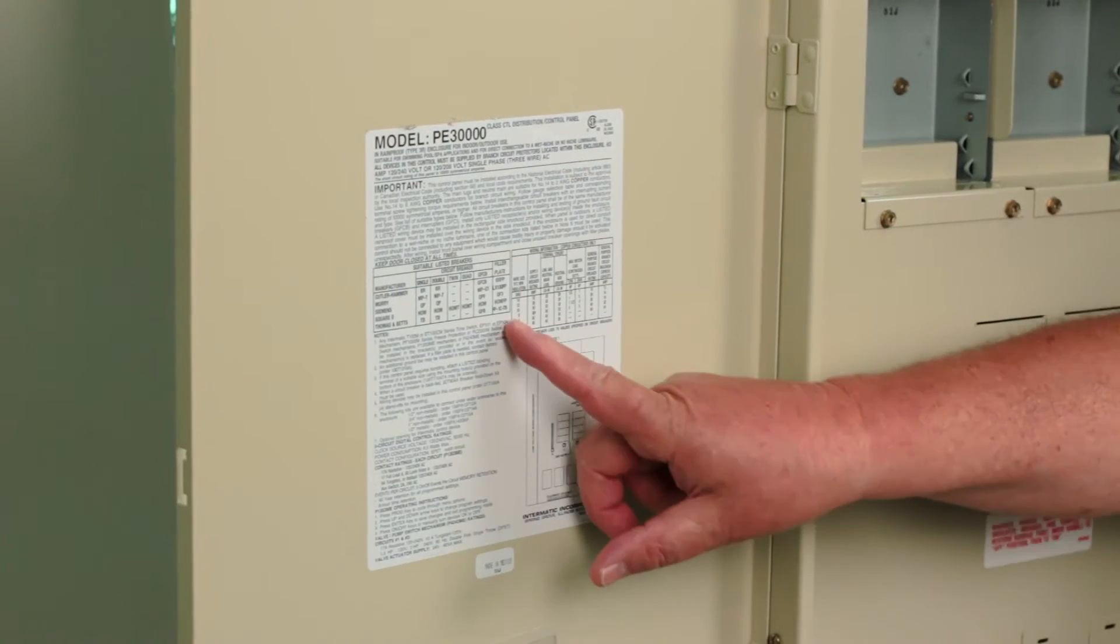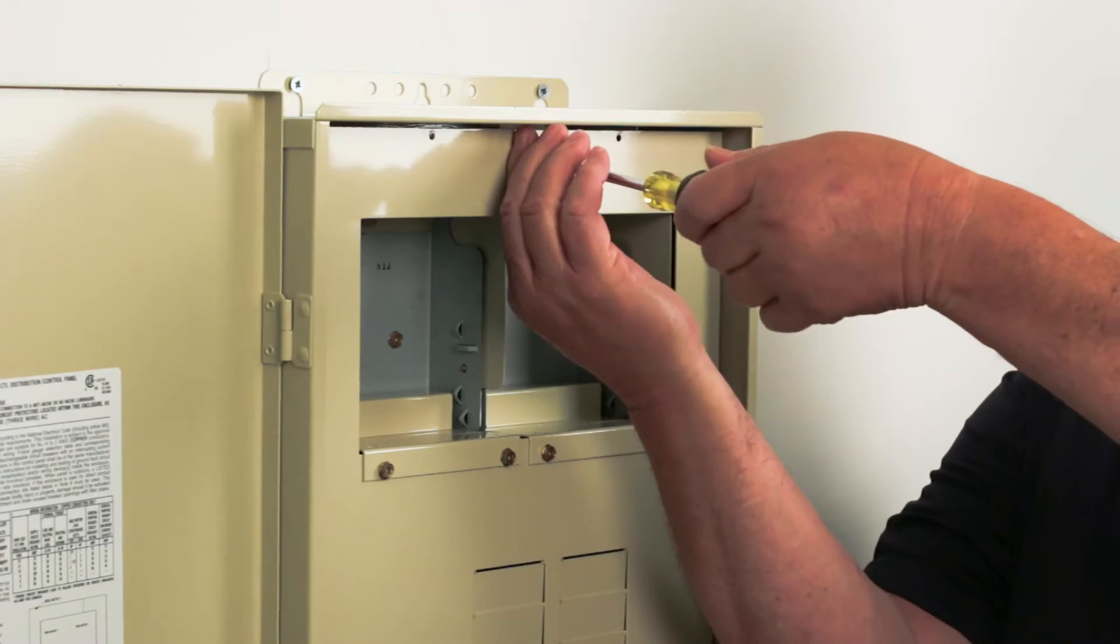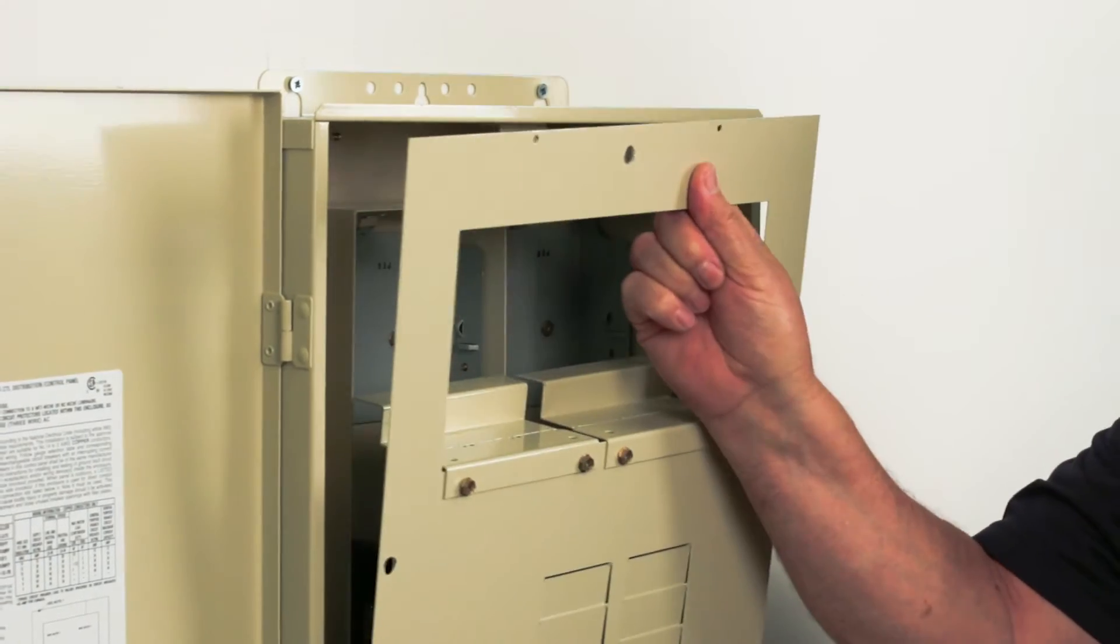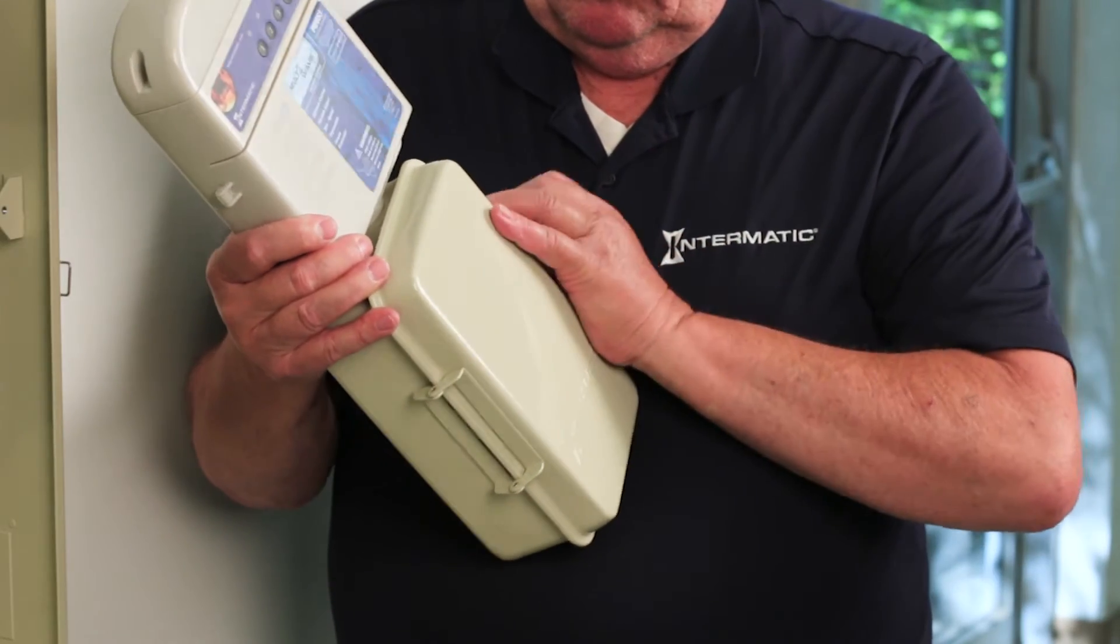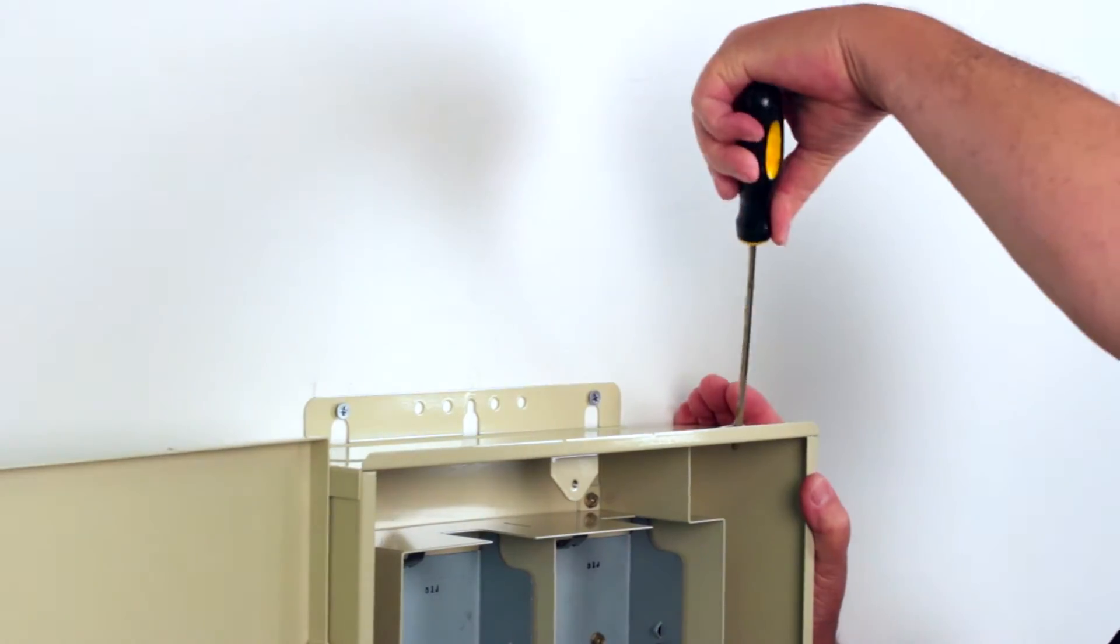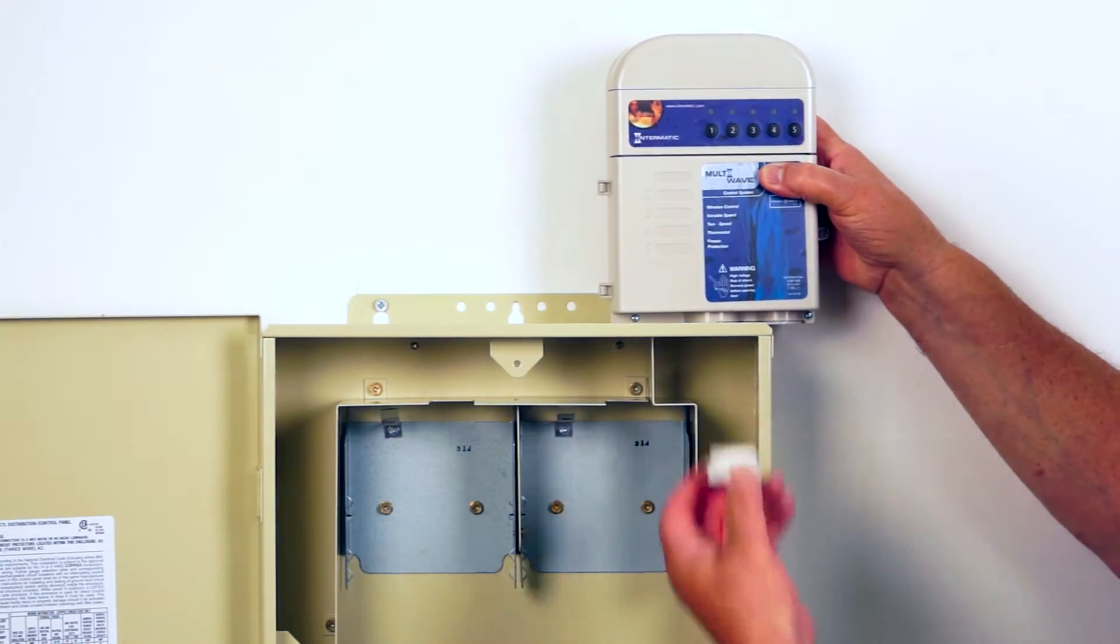Breakers are sold separately, so check the inside front panel for a list of acceptable types. Remove the dead front on the panel to install the MultiWave receiver. The receiver comes shipped attached to a small enclosure box. Unscrew the nut and gasket to remove the receiver. Mount the receiver to the top right knockout using the nut and gasket to keep the unit rain tight.